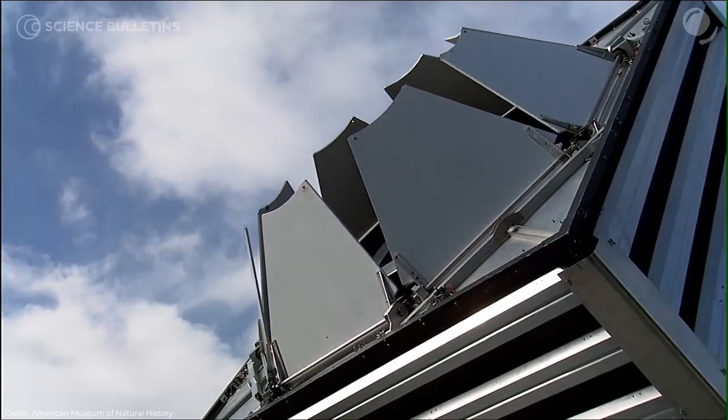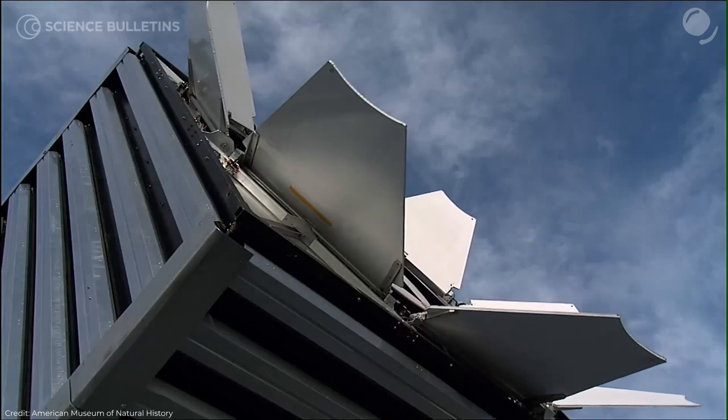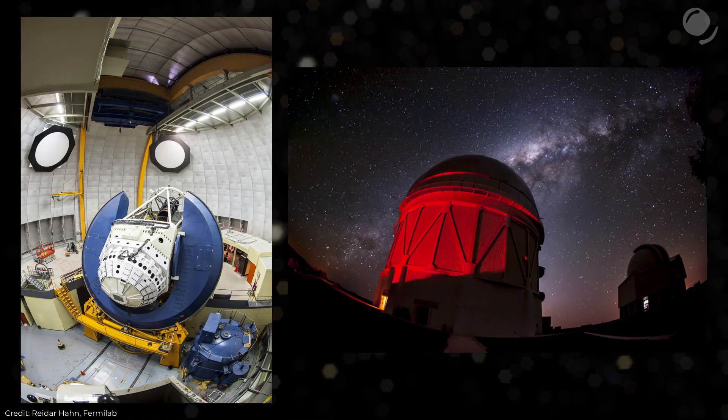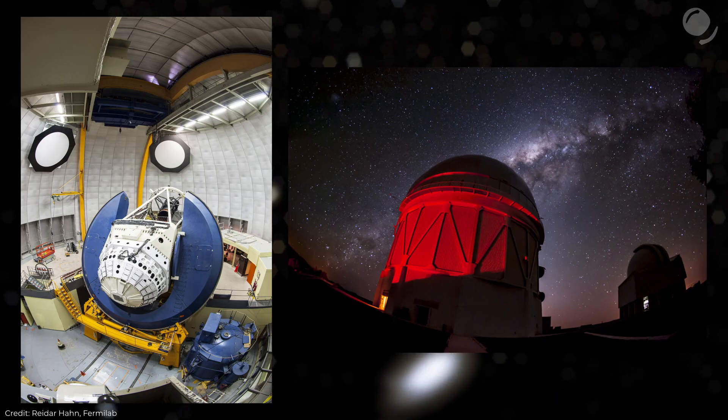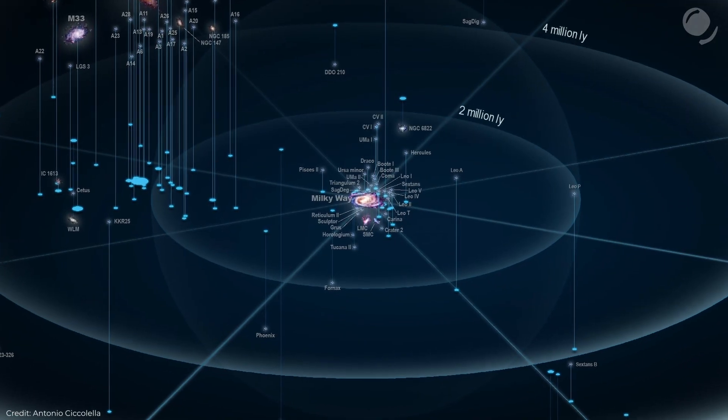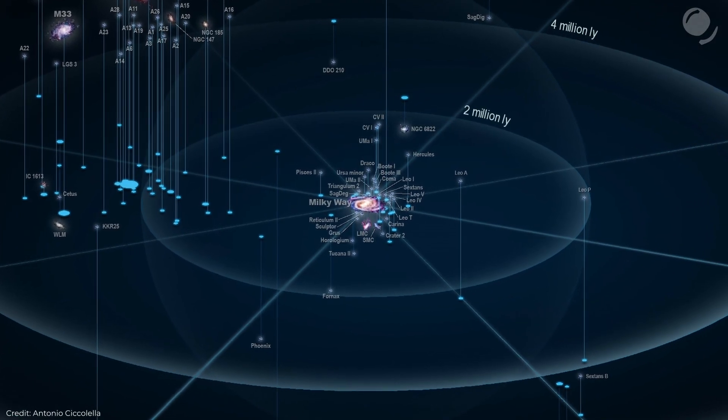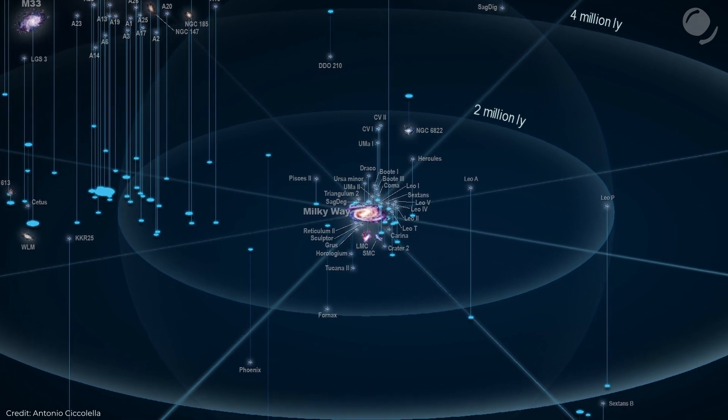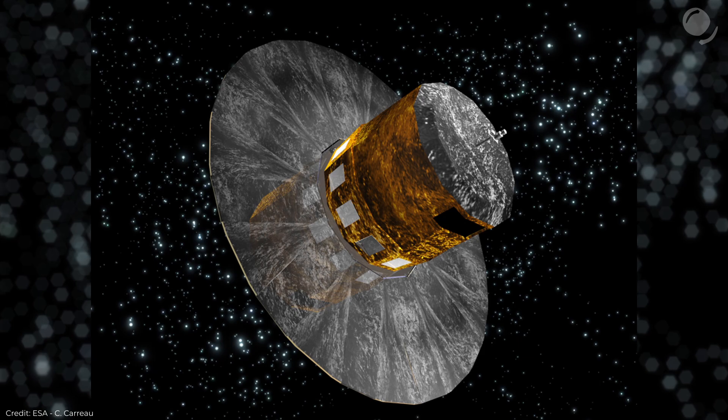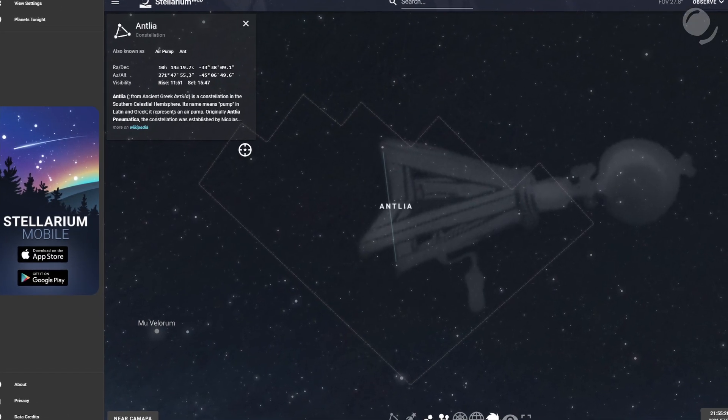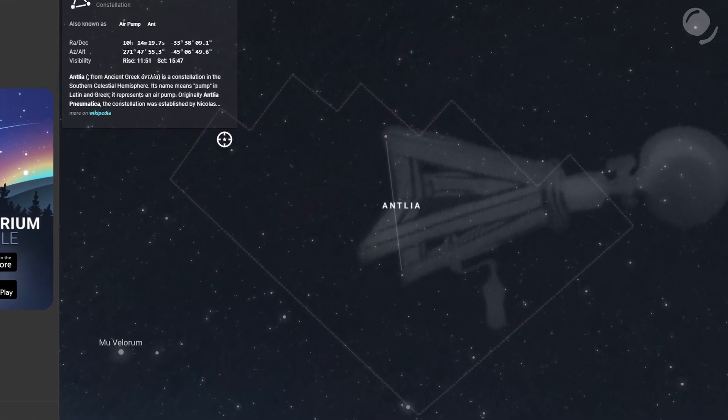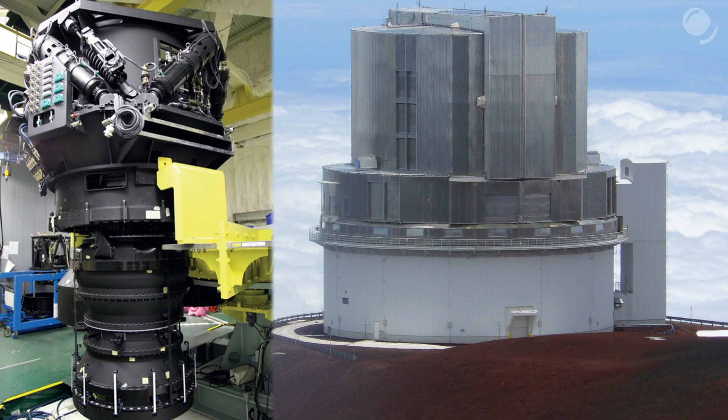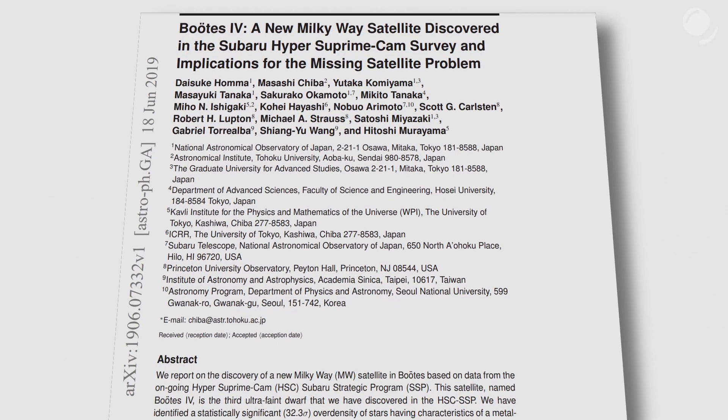Since then the Sloan Digital Sky Survey or SDSS has discovered about 20 more galaxies. And DES or Dark Energy Survey, about 20 more. So with this there are already about 50 satellite galaxies of the Milky Way and SDSS and DES are not the only instruments discovering new galaxies. Another one is Gaia Telescope. In 2018 it discovered a quite large galaxy in the constellation of Antlia. The galaxy was named Antlia 2. And in 2019 Subaru Telescope discovered Boötes IV galaxy.